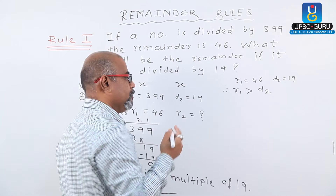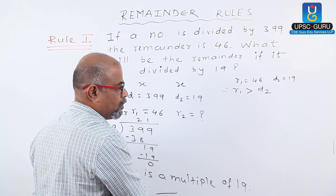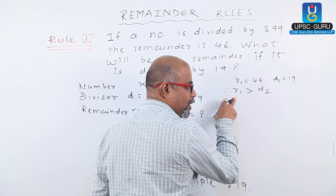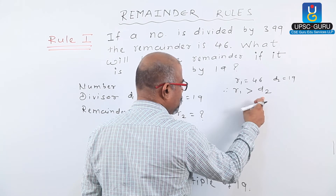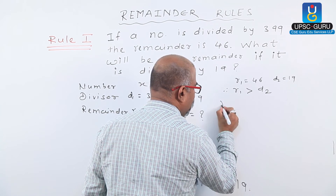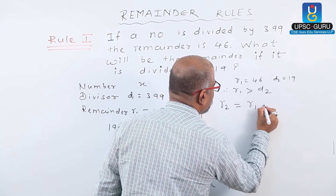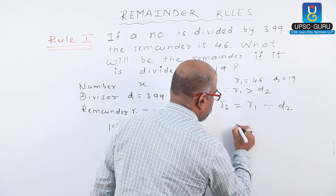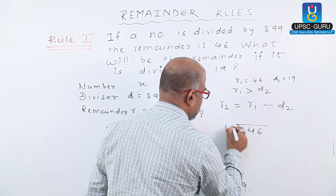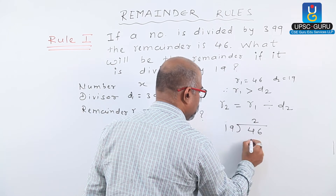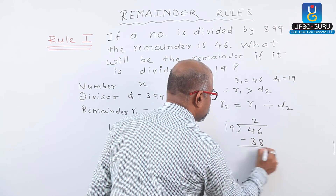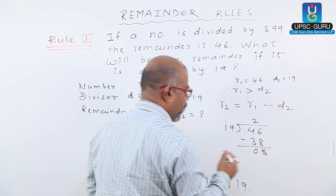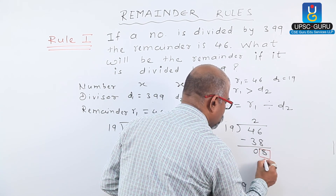In this case, when the first divisor is a multiple of the second divisor and the remainder of that divisor is greater than the second divisor, we get the required remainder: R2 equals R1 divided by D2. So 46 divided by 19: 19 times 2 is 38, remainder 8. Therefore the required remainder R2 equals 8.